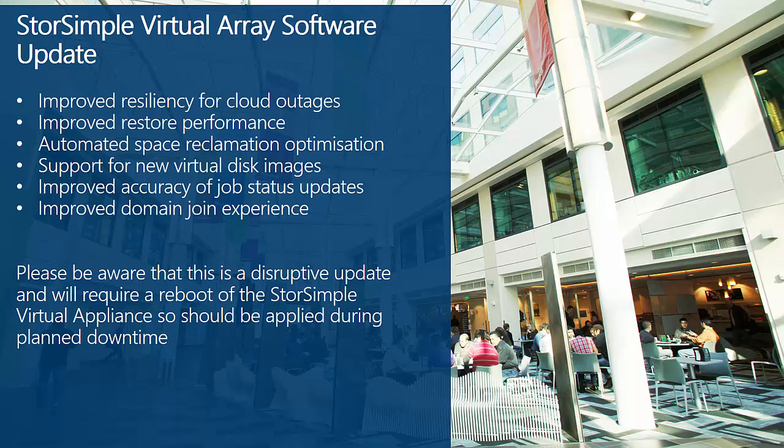Improved restore performance with bug fixes that have significantly cut down the completion time of restored jobs. Automated space reclamation optimization with improved reclamation processes, meaning that unused space becomes available faster compared to previous versions. There is support for new virtual disk images including VHD, VHDX and VMDK, improved accuracy of job statuses in the Azure portal, and improved domain join experiences with fixes related to domain joining and renaming of the virtual array.